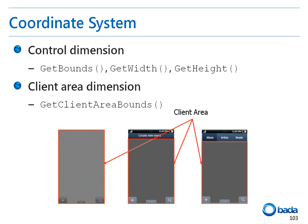Now let's look at the Bada UI coordinate system. In the Bada UI, the top left corner of the screen is the origin point, and each control has dimensions. You can get the dimension of a control as a rectangle by calling the getBounds function, or get the width and height of the rectangle using the getWidth and getHeight functions. Developers can also add controls within other controls depending on the type of control. In this case, the area of a control to which a control can be attached to is called the client area. You can get the client area of a control by calling the getClientAreaBounds function.